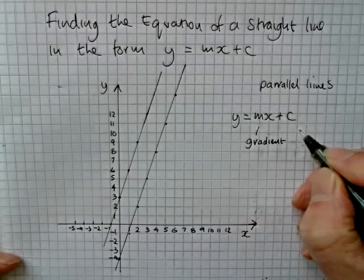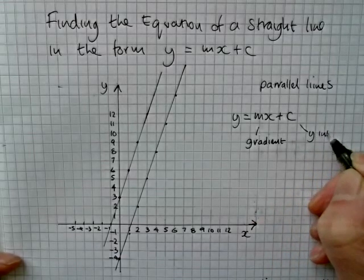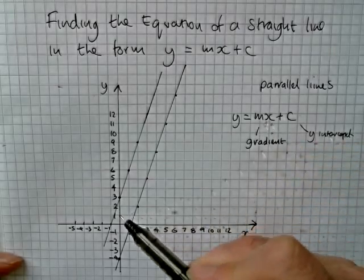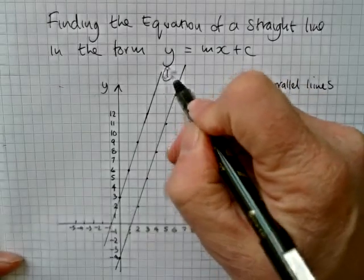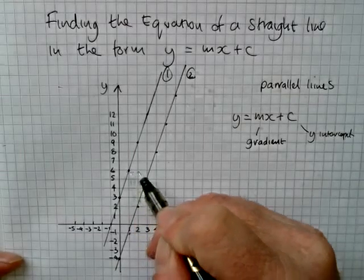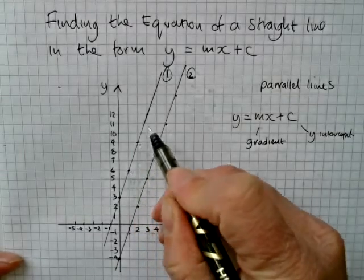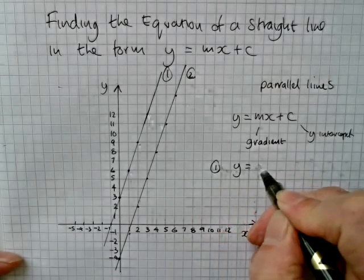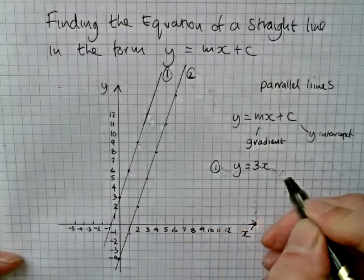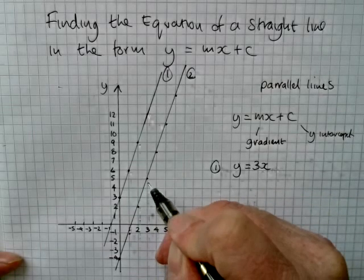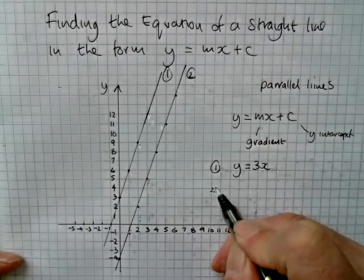So what we're looking at in this particular example is a case where the gradient m is the same. So if I look at my lines, I'm going to have two. We take line one, and we move across one and go up three, across one and go up three. So for line one, the gradient part is three, and for line two it's exactly the same. Going across one, up three, so I've got another three.